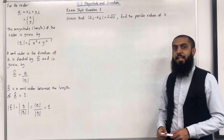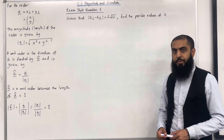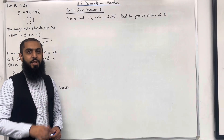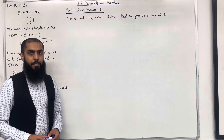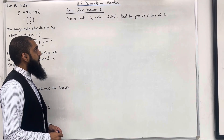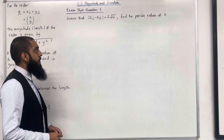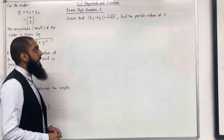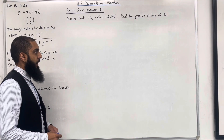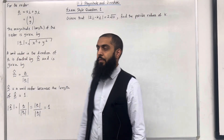I'll be implementing these key facts within exam-style questions. Here is exam style question 1: given that the magnitude of 2i − Kj is equal to 2√10, find the possible values of K.